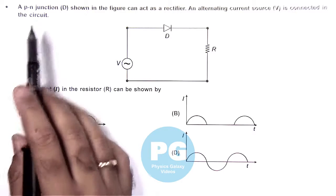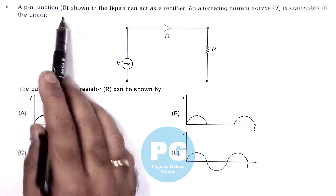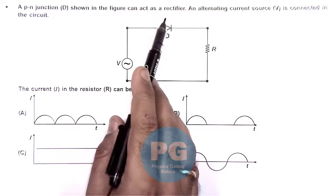In this question it says, a PN junction D shown in the figure can act as a rectifier.